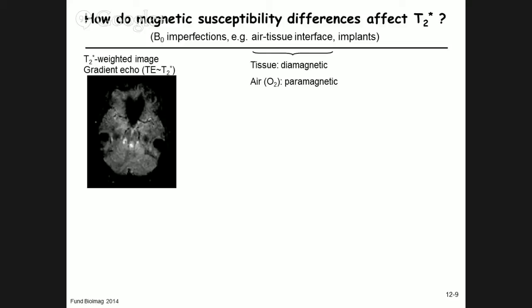The nose and sinuses — which are air-filled spaces containing paramagnetic oxygen — create magnetic field distortions around them, causing signal loss. The two black signal voids on the sides come from the ear canals, which are also air-filled and paramagnetic, creating additional distortions in the image.